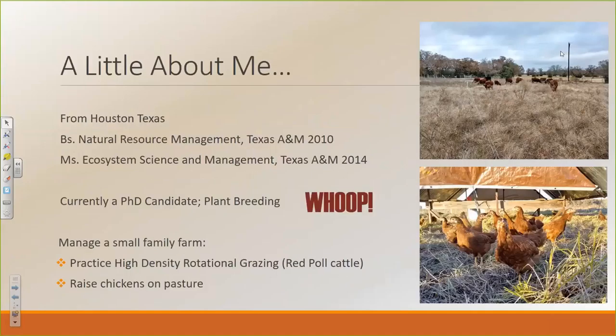So a little bit about me. I'm originally from Houston, Texas. I've been at A&M since about 2007. I got my bachelor's in natural resource management, master's in ecosystem science management, and now I'm here working on my PhD in plant breeding. In addition to my academic life, I help my family manage a small family farm where we practice high-density rotational grazing and we raise chickens on pasture.